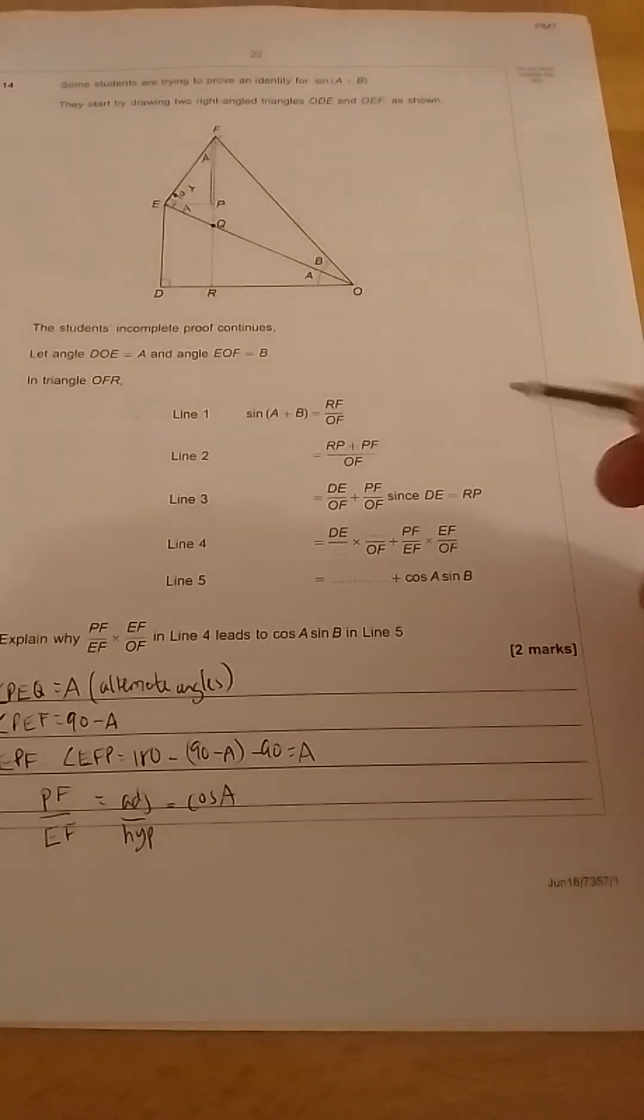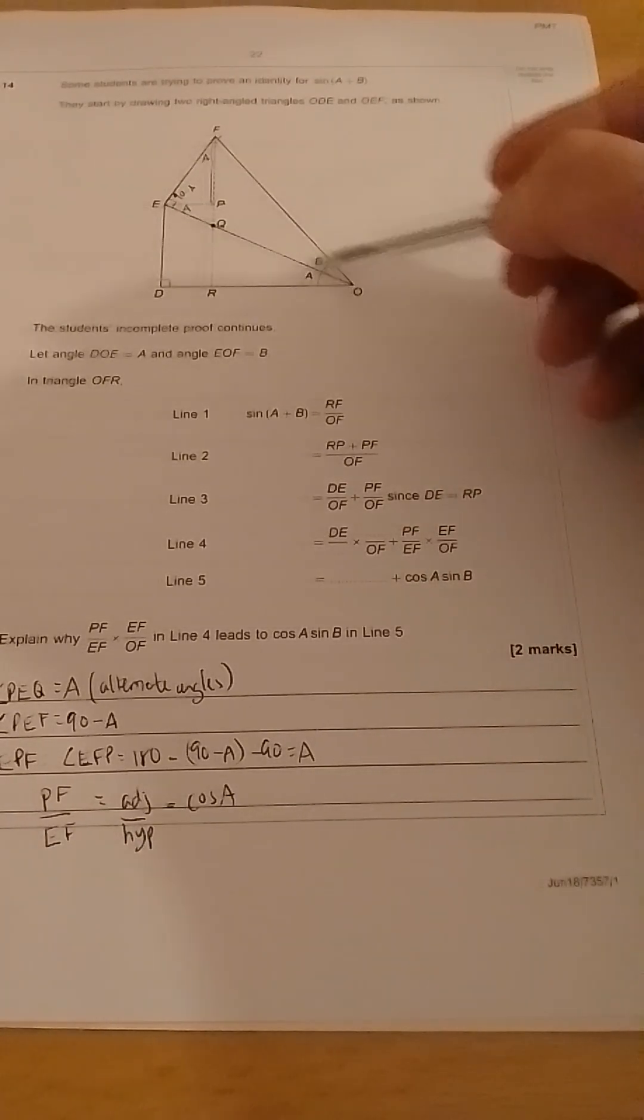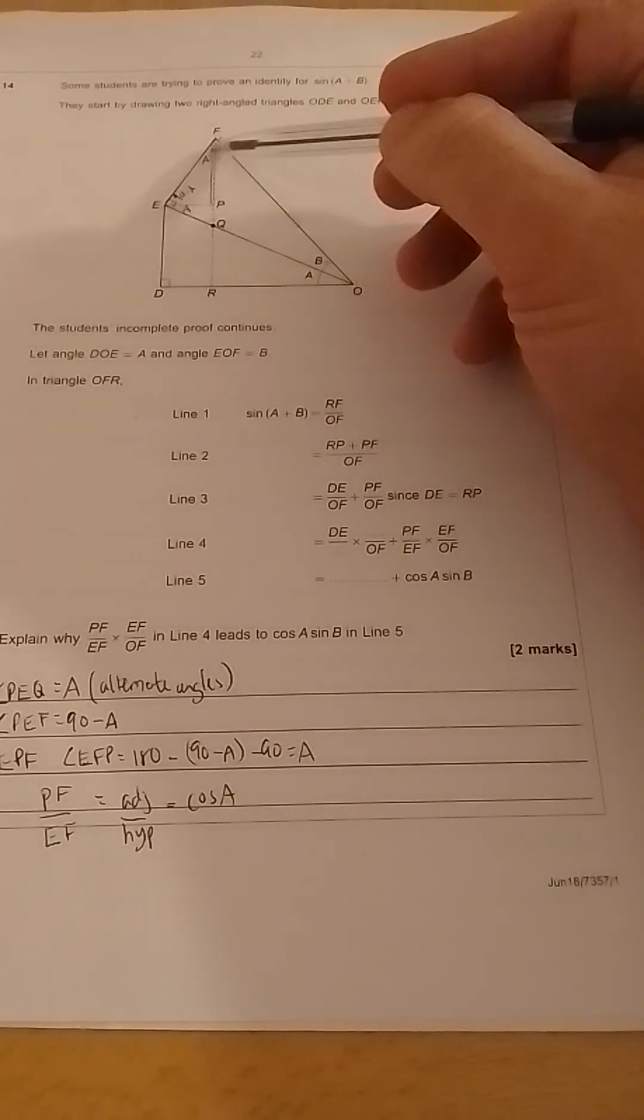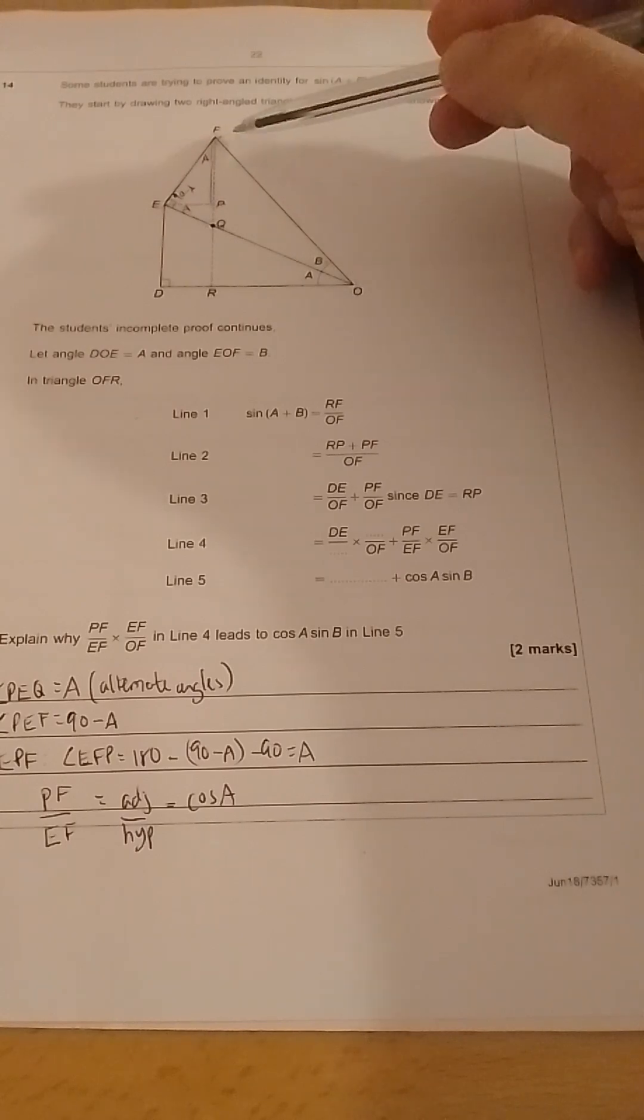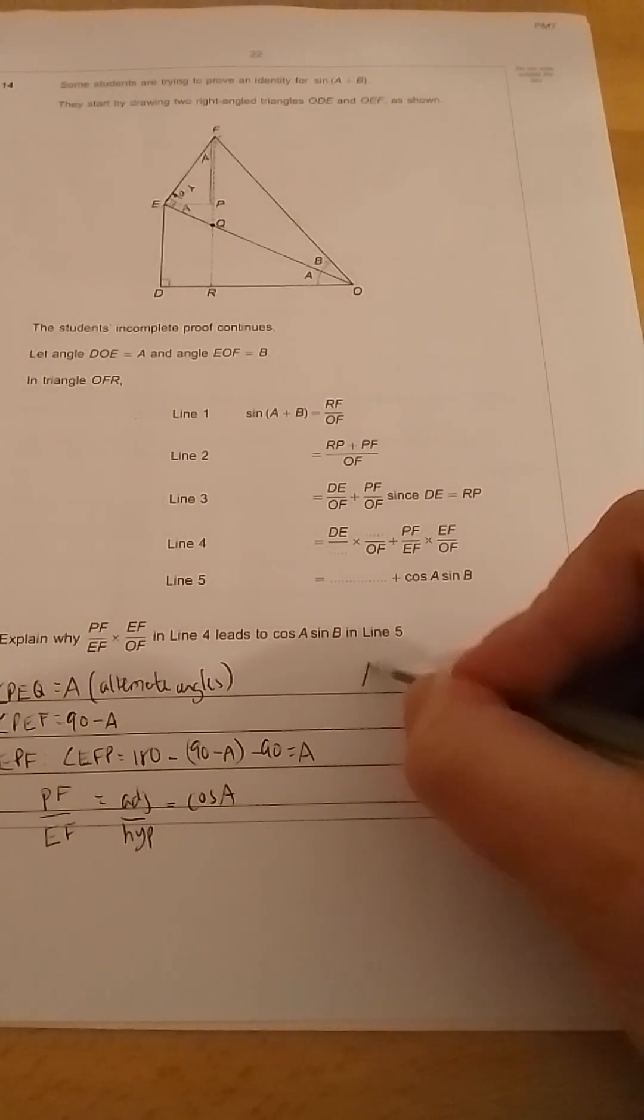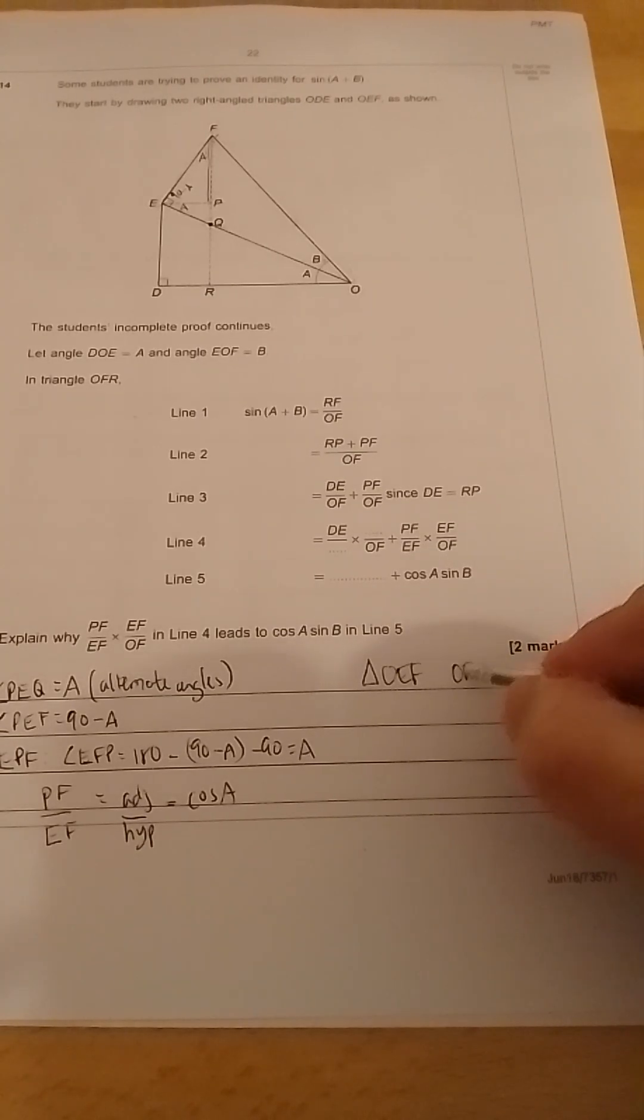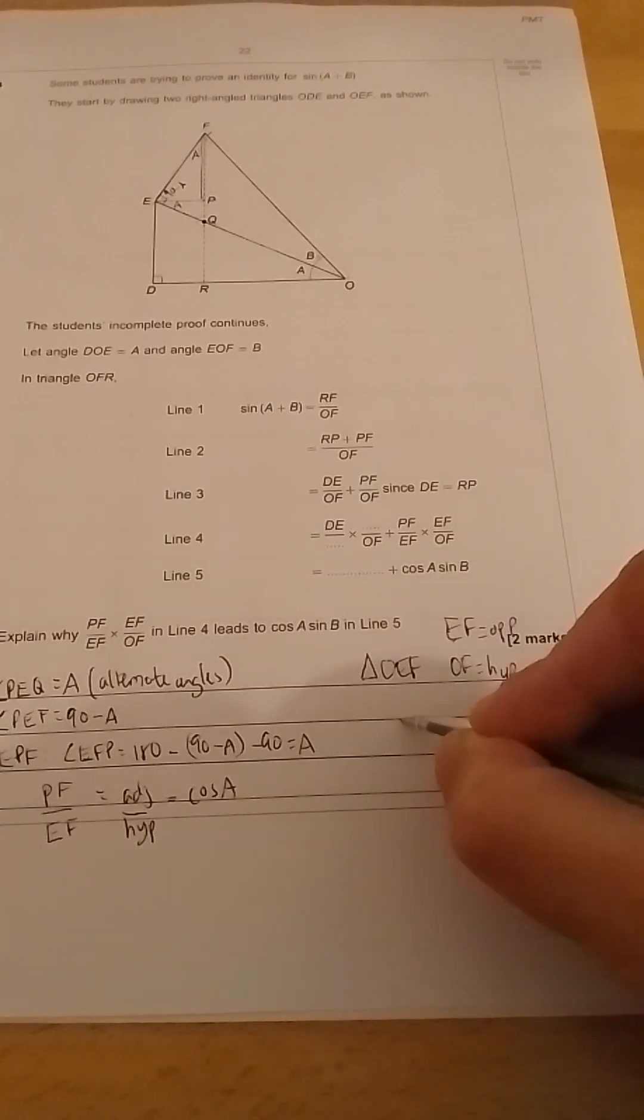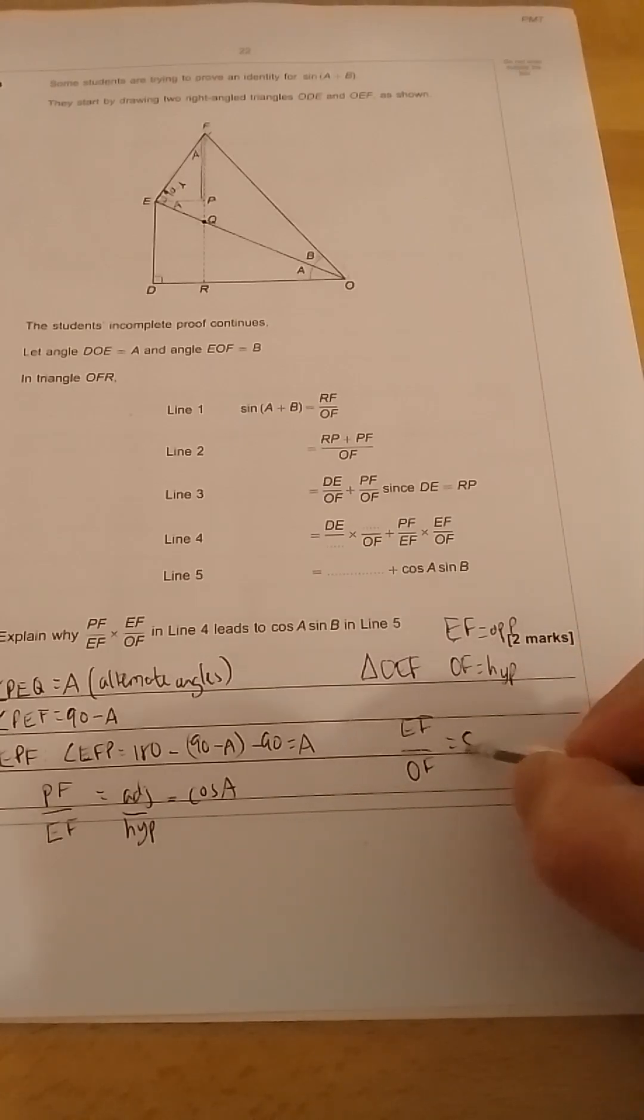Likewise, if we look at the other triangle for this triangle here, EF, which is this side, and OF, which is this side, are the hypotenuse and the opposite of that triangle. So for triangle OEF, OF is equal to the hypotenuse. Actually, I'll write it above. EF is equal to the opposite. So EF over OF is equal to sin B.